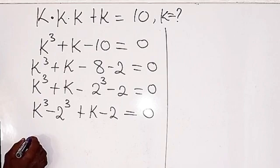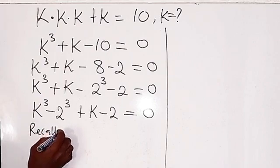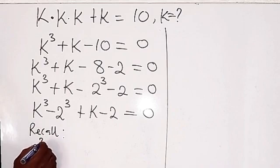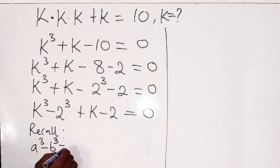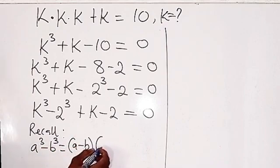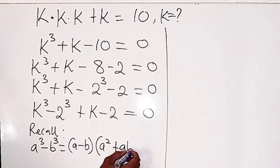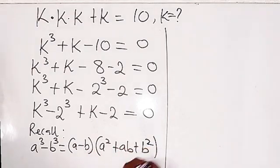So we should recall that when you have a to the power of 3 minus b to the power of 3, this will give us a minus b, then in brackets: square a, then multiply a and b together, plus square b. So we have a squared plus ab plus b squared.